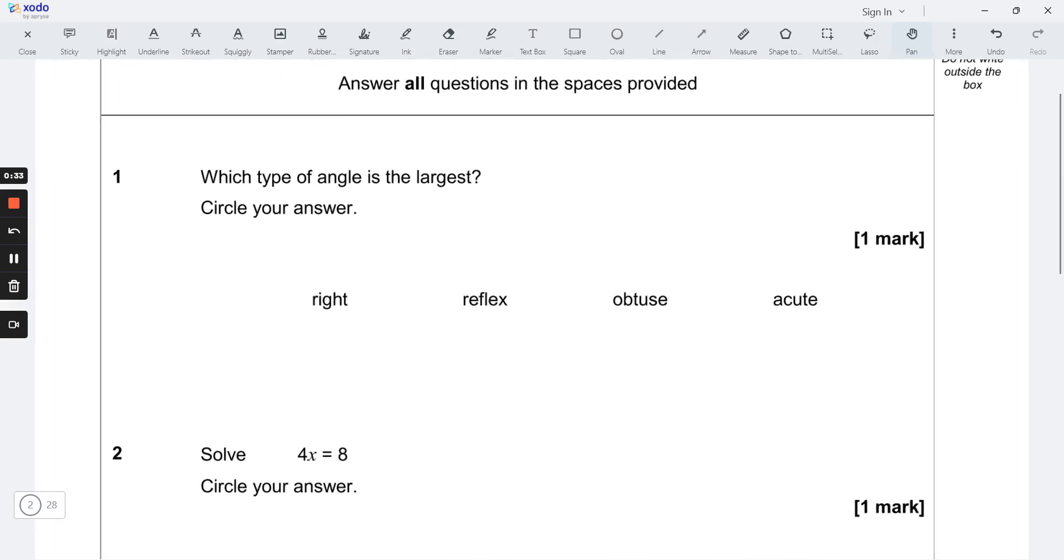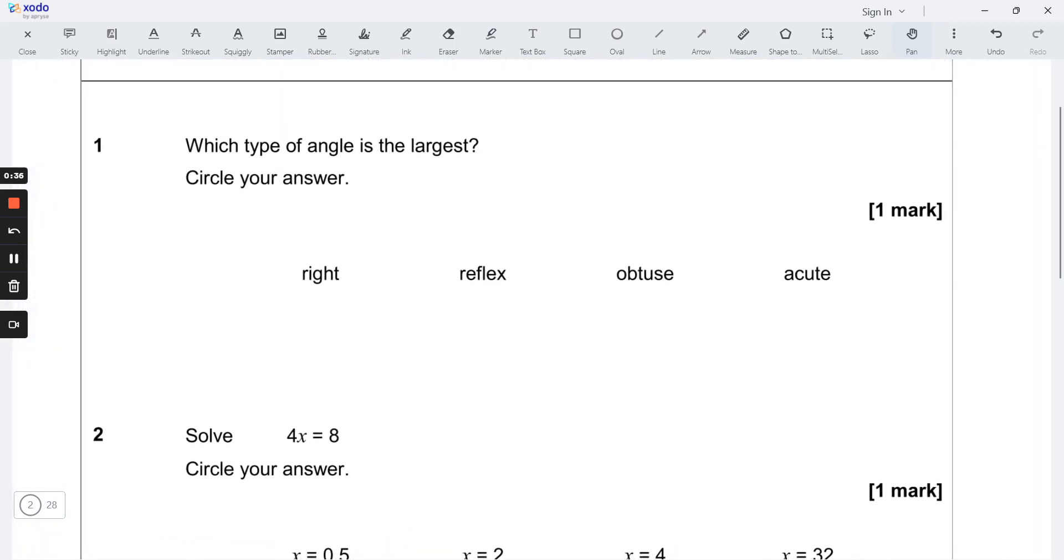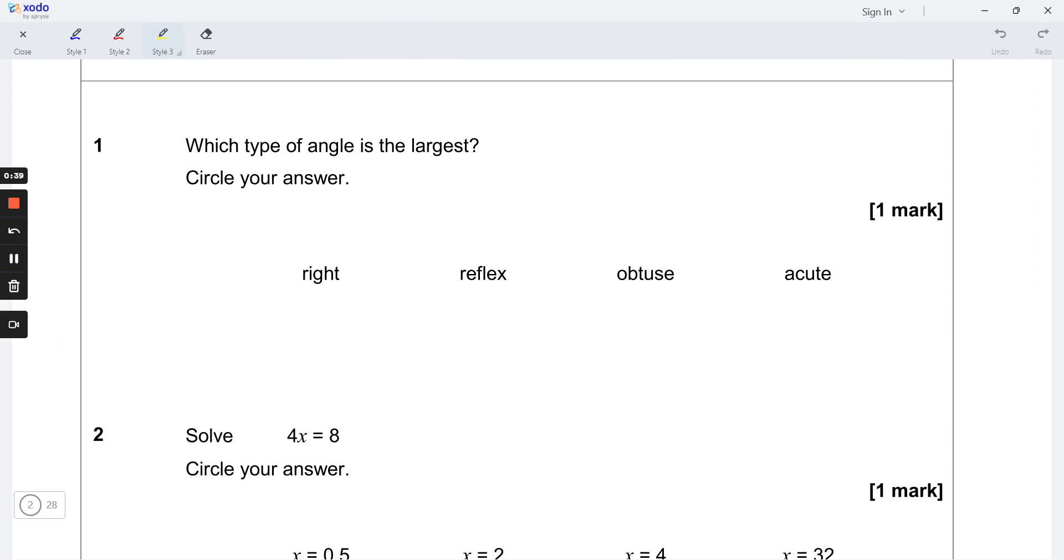Question number one here: which type of angle is the largest? Circle your answer. We know that right angle here is no more than 90 degrees, reflex is greater than 180 and less than 360 degrees, obtuse is greater than 90 and less than 180 degrees, and acute angle is between zero and 90 degrees. So the largest one is a reflex angle.